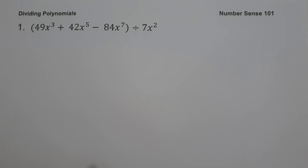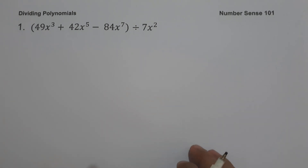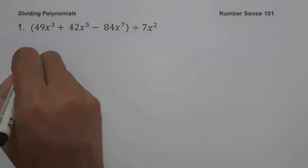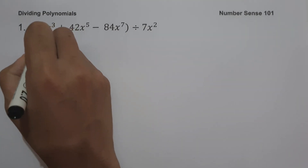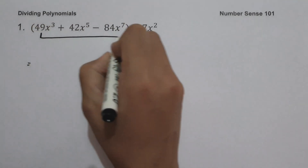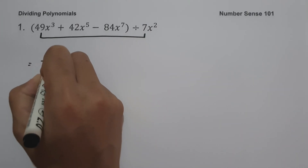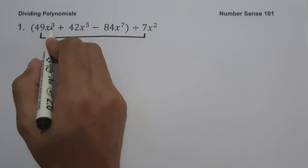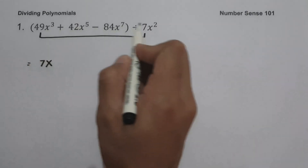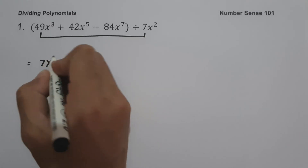On number one, we have the quantity 49x cubed plus 42x raised to 5 minus 84x raised to 7, divided by 7x squared. So to simplify this, let us have 49x cubed divided by 7x squared, which is 7. Let us copy the variable and subtract the exponents: 3 minus 2 equals 1.